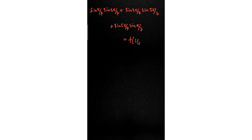Starting the solution, I'll write the equation given: sin(π/7)·sin(3π/7) + sin(3π/7)·sin(5π/7) + sin(5π/7)·sin(π/7), and this equals f(cos(π/7)). Let me think about how to approach the next step.